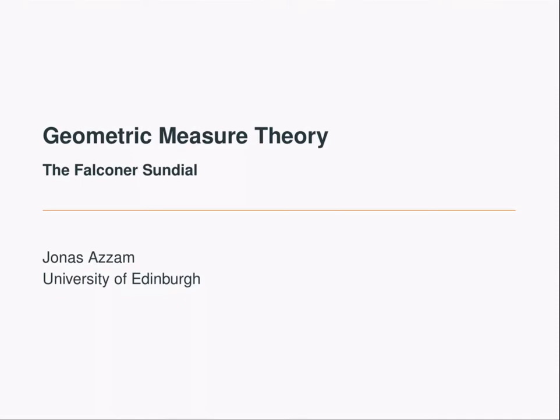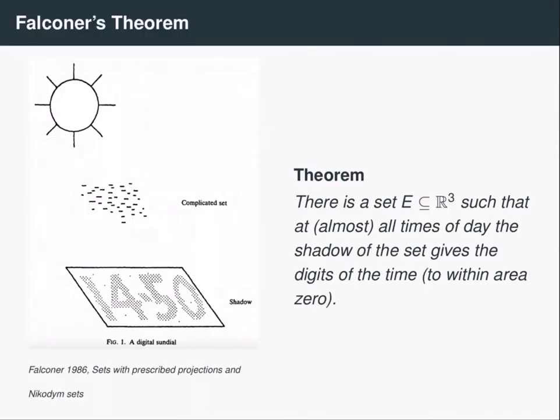We now come to one of my favorite theorems of geometric measure theory, the Falconer sundial. An acute consequence of the theorem is that there exists a subset of R3 such that almost all times of day, the shadow of the set gives the time of day in digital, at least up to a set of Lebesgue measure zero.